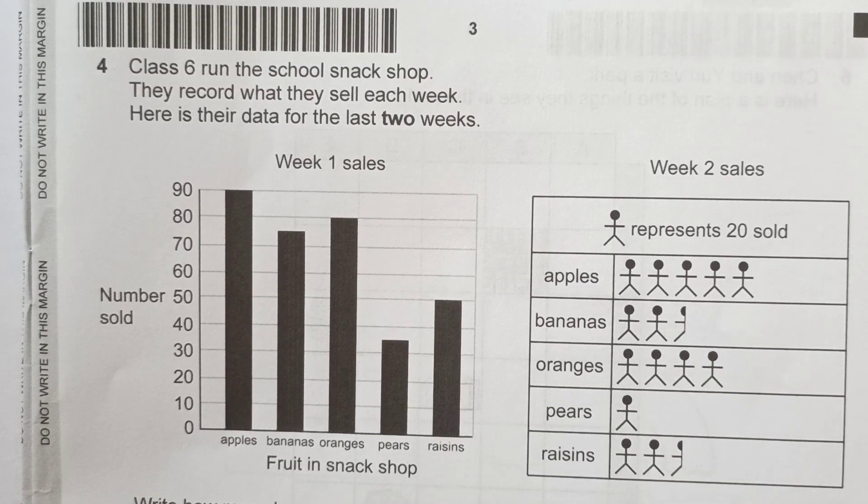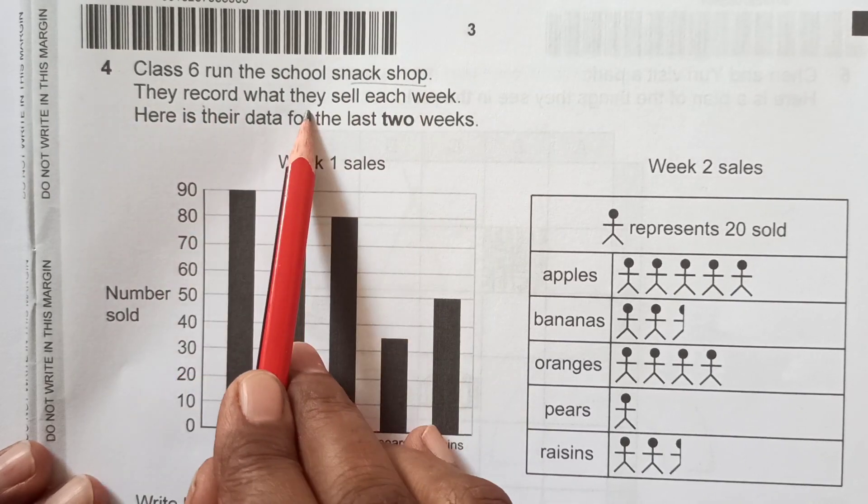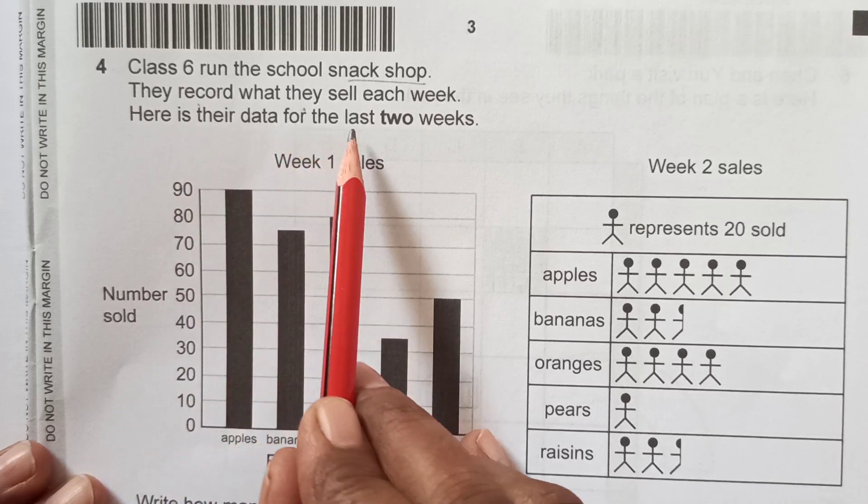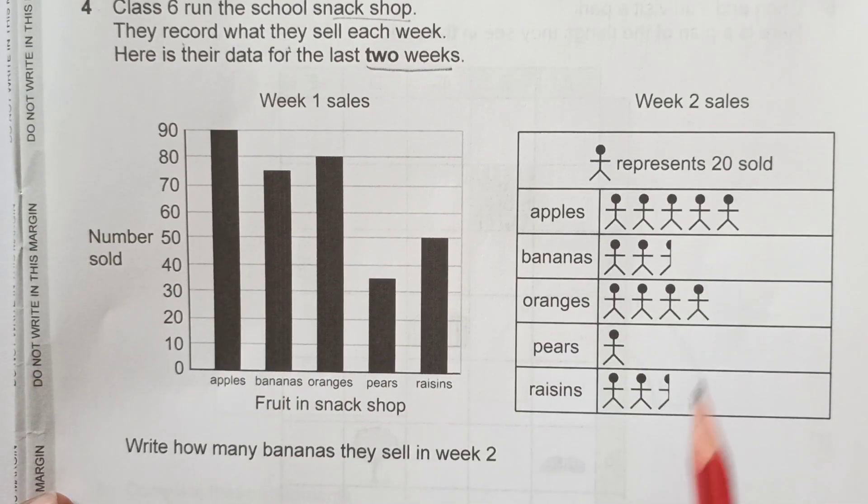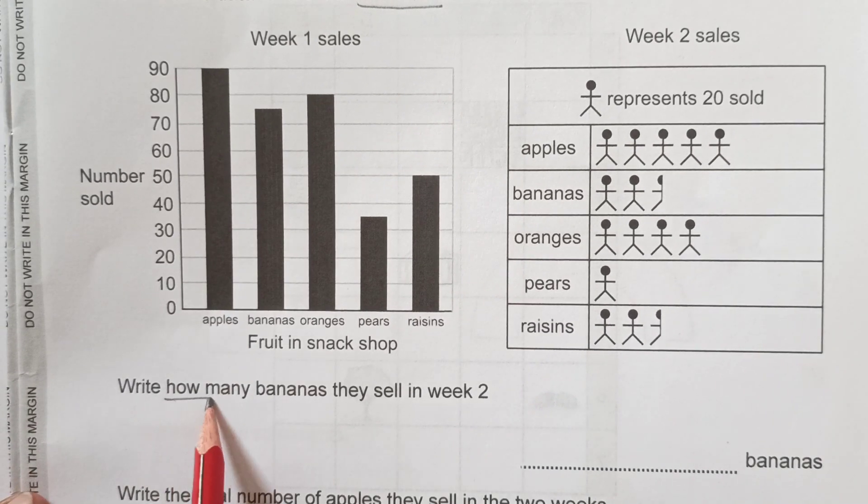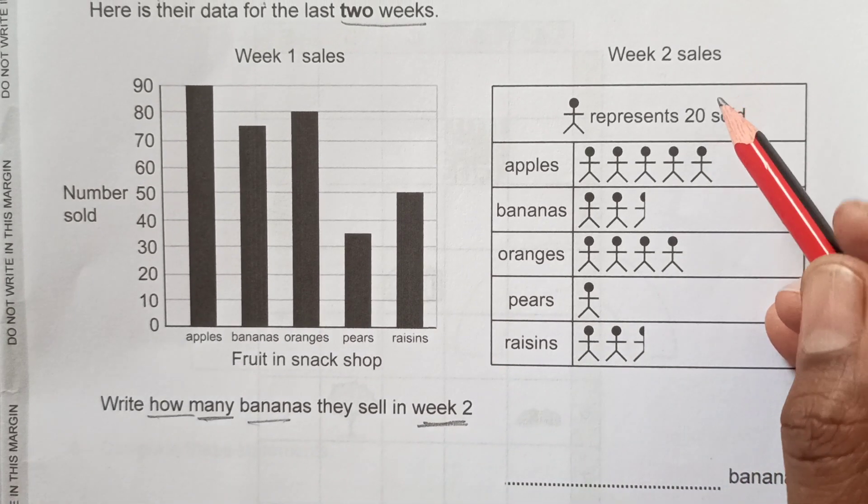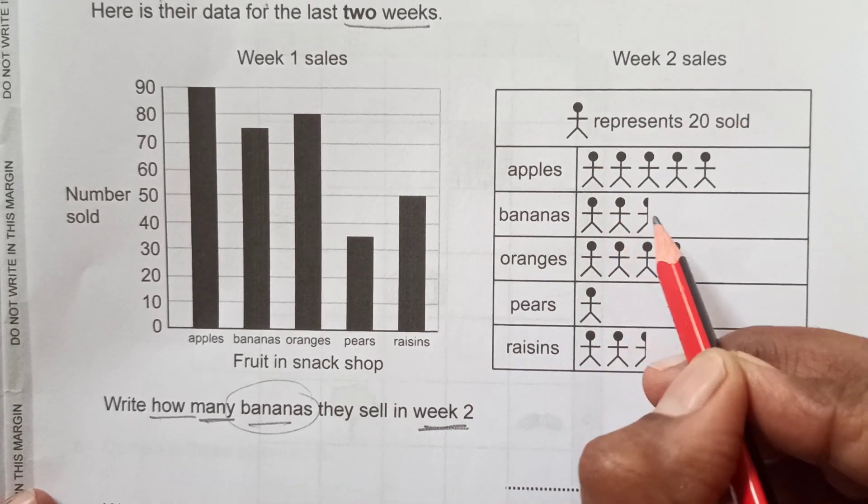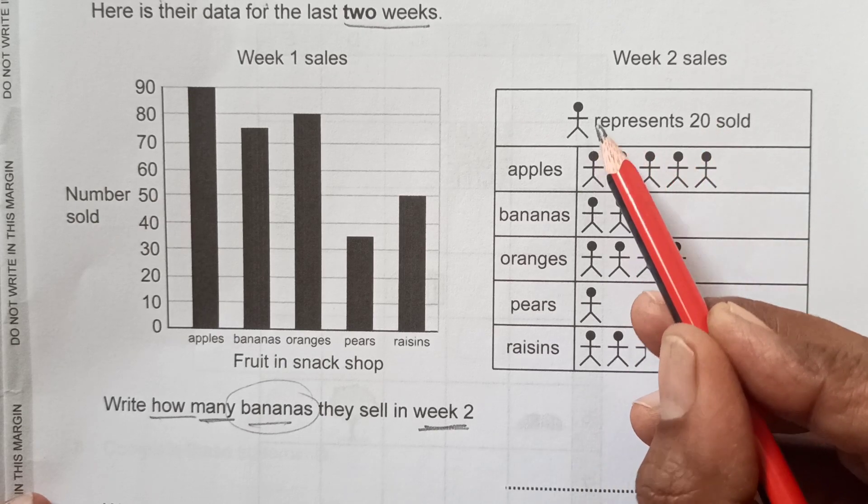Question 4: Class 6 run a school snack shop. They record what they sell each week. Here is the data for last 2 weeks. This is week 1 sales, this is week 2 sales. Here we have bar graph and we have here the pictograph. Write how many bananas they sell in week 2. We will go to week 2, this is week 2, and we are looking for bananas. Bananas are here. You see this one, how many are there? We need to see. For that, we first need to see the key.